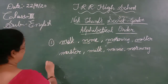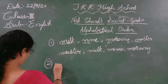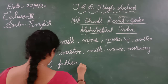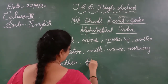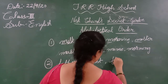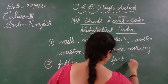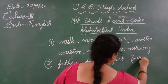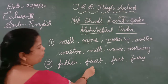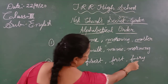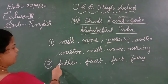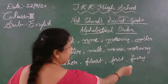Now coming to another example. The words are: father, forest, first, fairy. Again, all the words are starting with F itself. So we have to see the alphabetical order of the next letter.